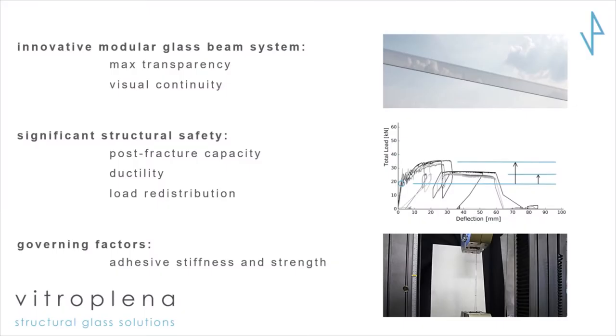Going to conclusions: we have developed a modular glass beam system which maximizes the transparency and visual continuity of the beam. We don't use any steel plates, we don't use any bolts, we don't have to drill holes, and we can apply annealed float glass — not tempered. We have significant structural safety, we have post-fracture capacity, there is significant ductility in the system, and we can even trigger load redistribution. The governing factors are the stiffness and the strength of the cast resin or adhesive used to make that connection.